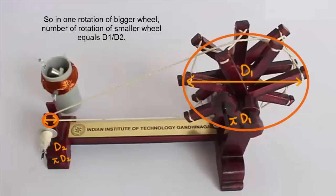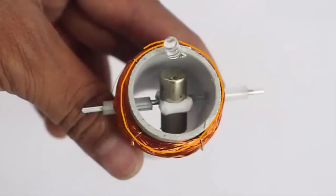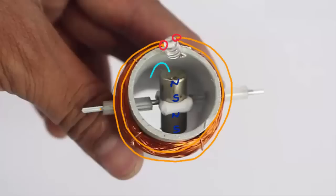In our case, the ratio is about 10. So the smaller wheel will spin 10 times as fast as the larger wheel. Now two ends of the coil are connected to a LED and two magnets stuck to each other spin inside the coil.